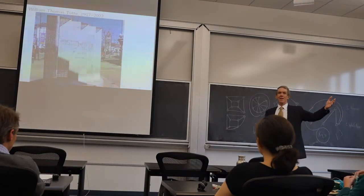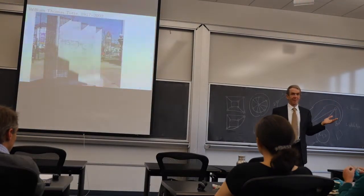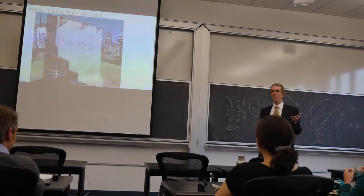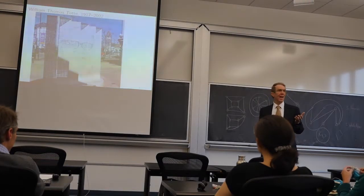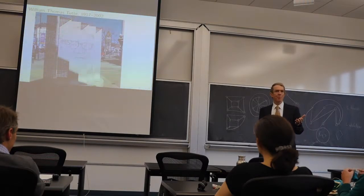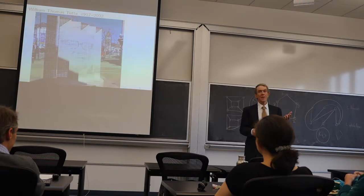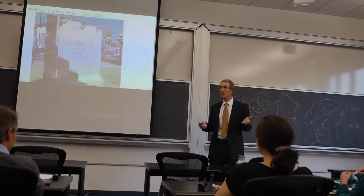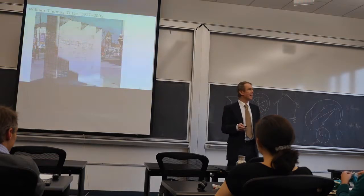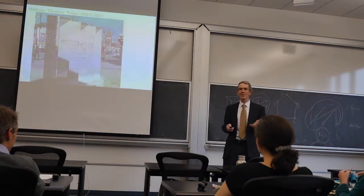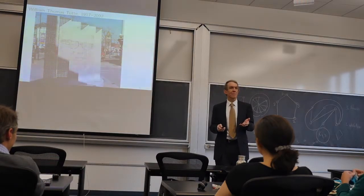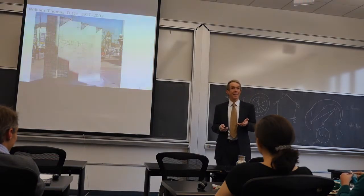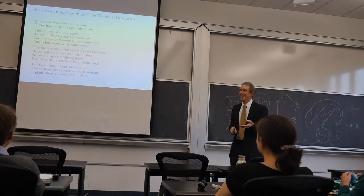What's called the Three Houses problem. In central Spain, in mainly rain, three houses stood upon the plain. The houses of our mystery, to which from realms of industry came pipes and wires to light and heat, and other pipes with water sweep. The owners said, where these things cross, burn, leak or short, will suffer loss. So let a graph man living near plant each from each to keep them clear. Tell them, graph man, come in vain. They'll bear the cross that must remain. Explain the plainness of the plain.